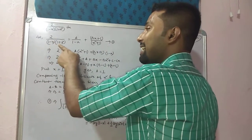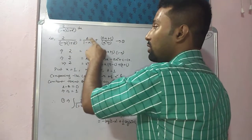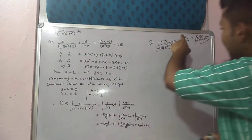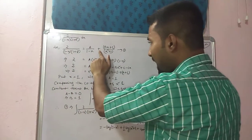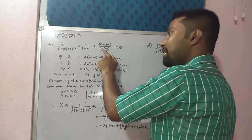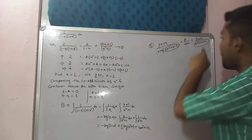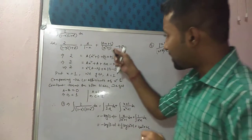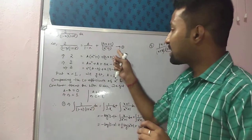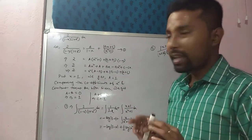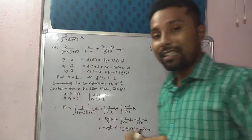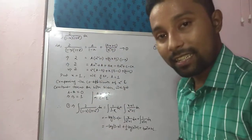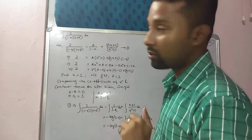So let 2 by (1 minus x)(1 plus x square) equal to a by (1 minus x) plus (bx + c) by (x square + 1), where (bx + c) is over the quadratic expression which cannot be factorized. Say this is equation one. Now, there are three unknown terms: a, b, and c. You have to find the values of all three unknown terms.